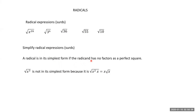A radical is in its simplest form if the radicand has no perfect square factors. For example, the cube root — actually the square root of x cubed is not in simplest form, because x³ = x² × x, and x² is a perfect square. So the root of x² is x, and the remainder — what I call the 'leftover' — is root x. Therefore x times root x is the simplified radical form.